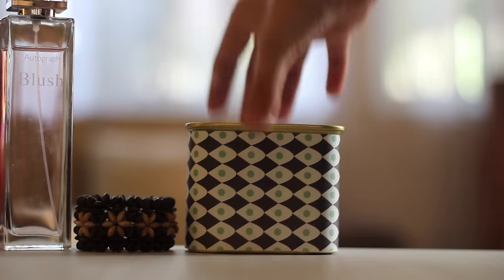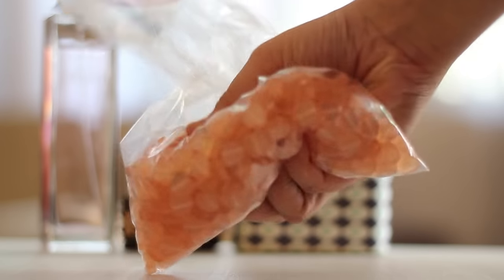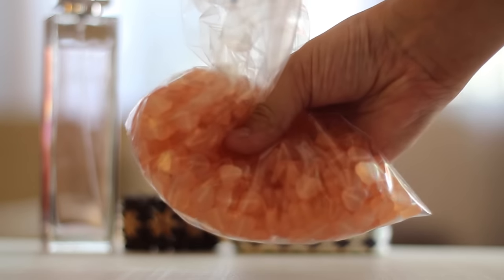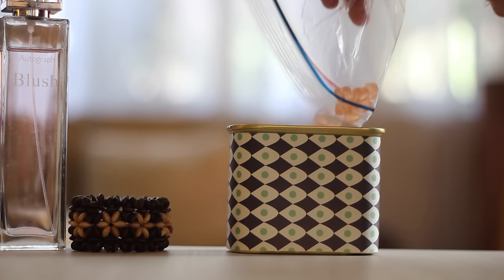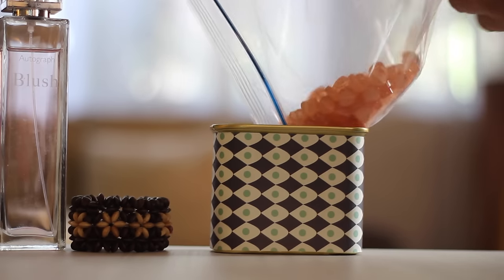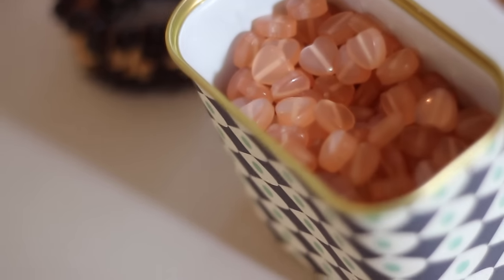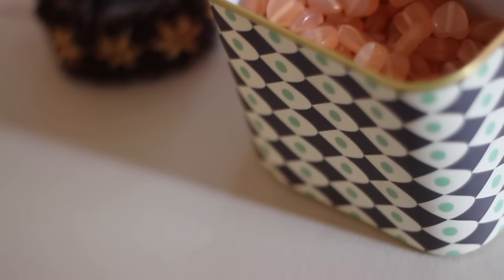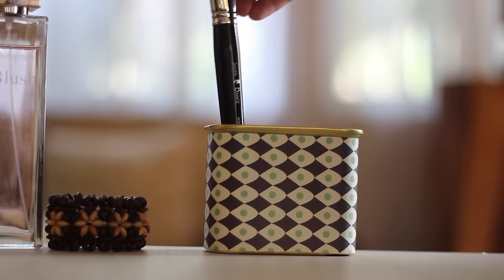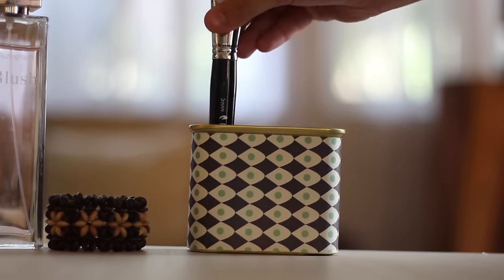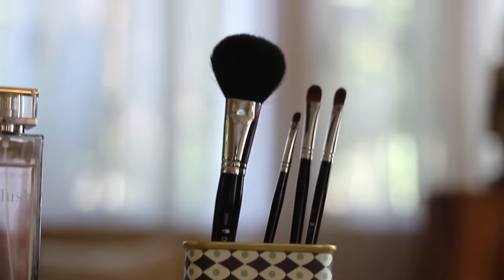Now for the can I upcycled earlier, I'm just going to take these little heart beads. You can use any beads you want. I think you can even use rice for this kind of thing, and just pour them into your tin can. It looks really pretty inside, but the real reason we did this is because now I can take my makeup brushes and I can just stick them down into the can and they stand straight up, so it makes a really nice makeup brush holder or even for your pens.